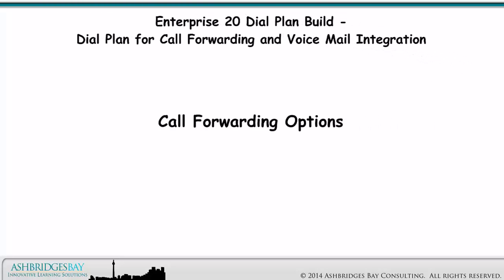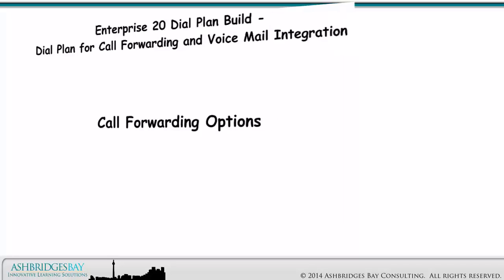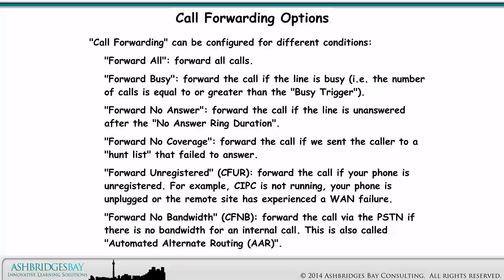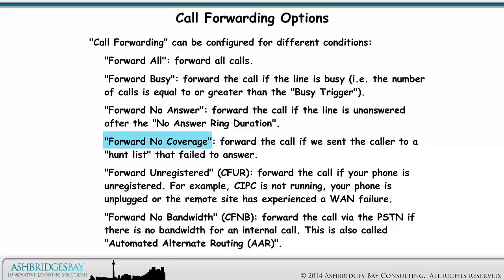There are a variety of options for call forwarding, configured for different conditions. Forward all: forward all calls. Forward busy: forward the call if the line is busy, i.e., the number of calls is equal to or greater than the busy trigger. Forward no answer: forward the call if the line is unanswered after the no answer ring duration. Forward no coverage: forward the call if we sent the caller to a hunt list that failed to answer.